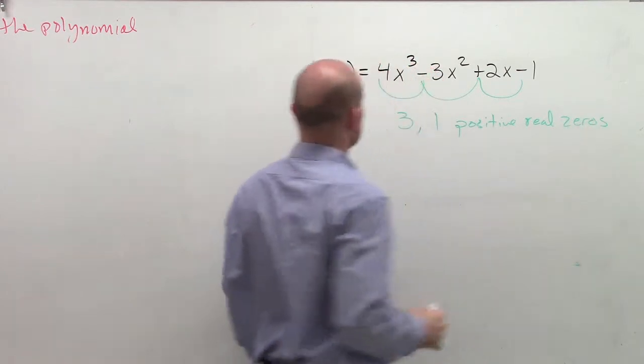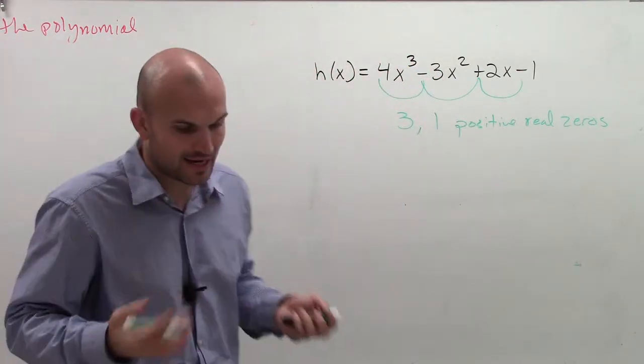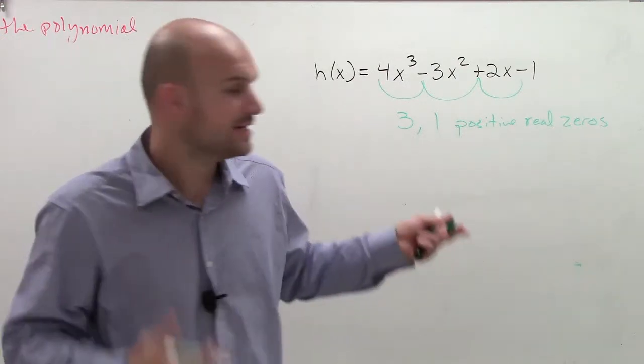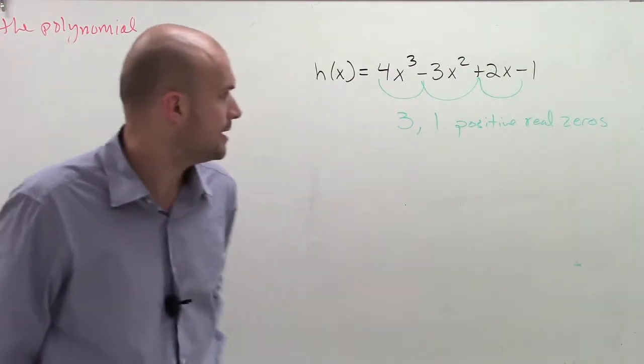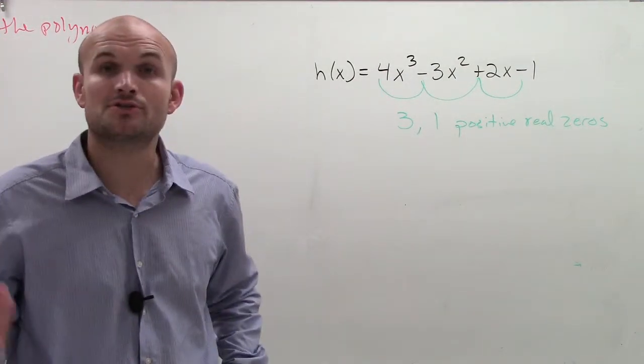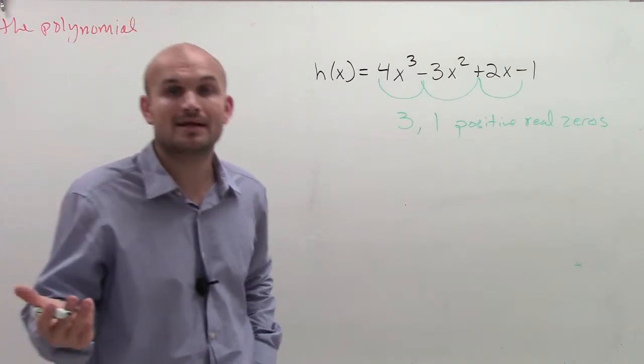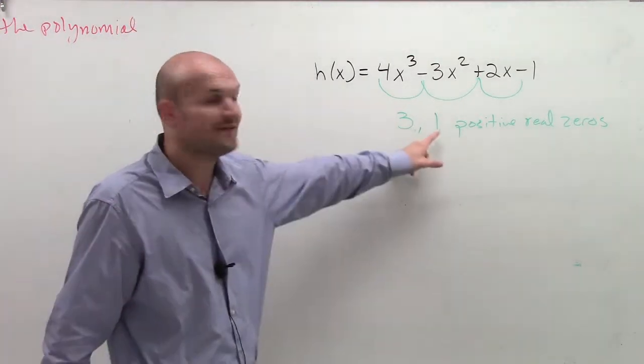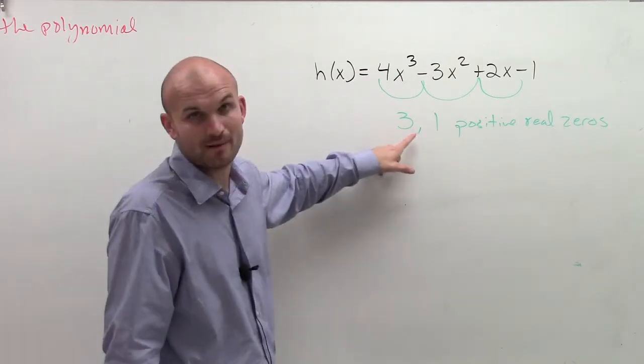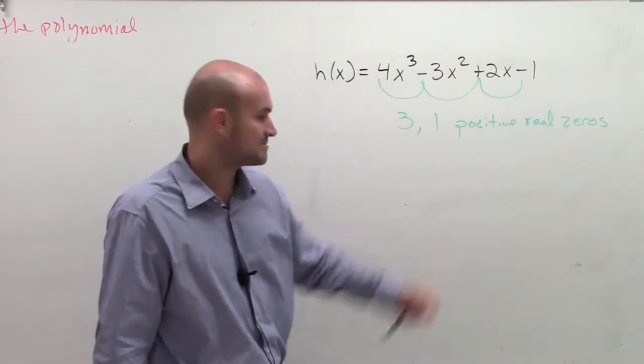So if you look at this, I have a polynomial to the third power. So I'm only going to have three zeros. One of them is definitely going to be positive. It's either all of them are positive or one of them is going to be positive.